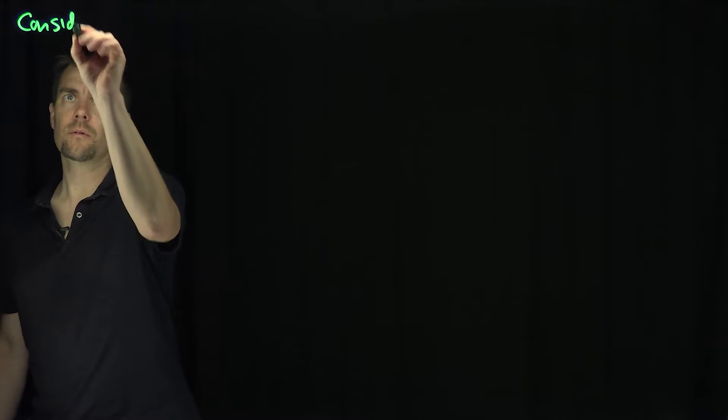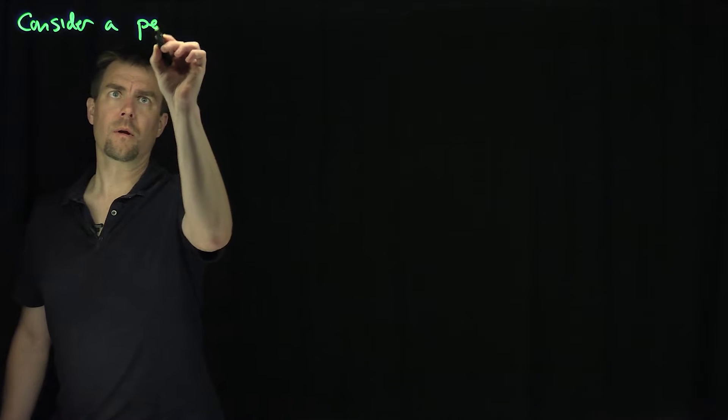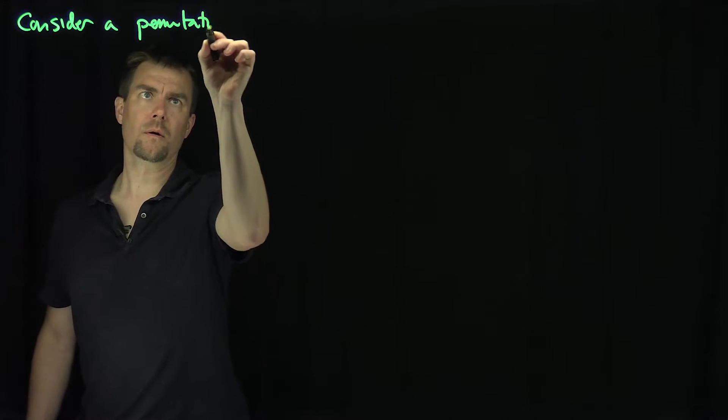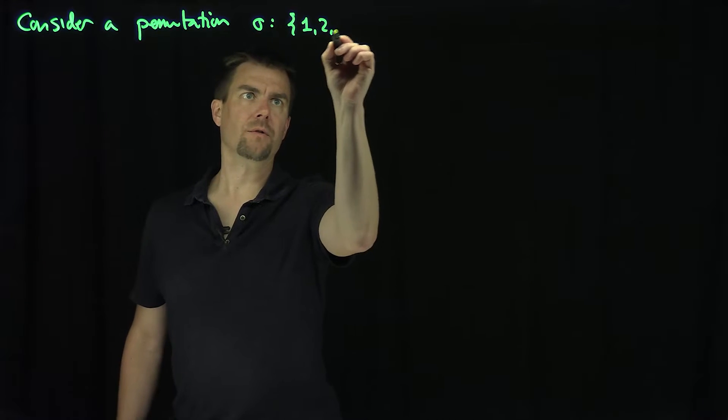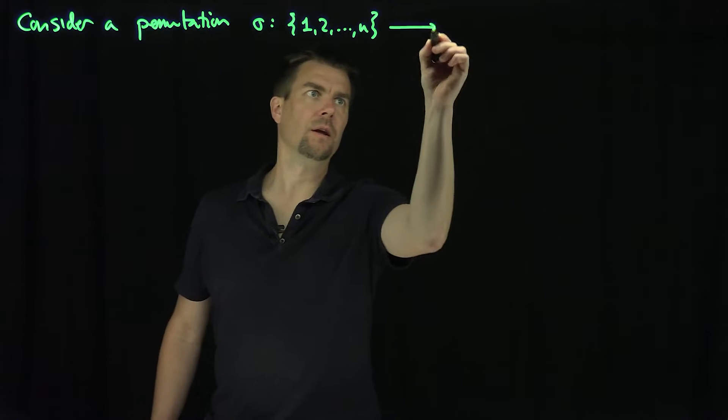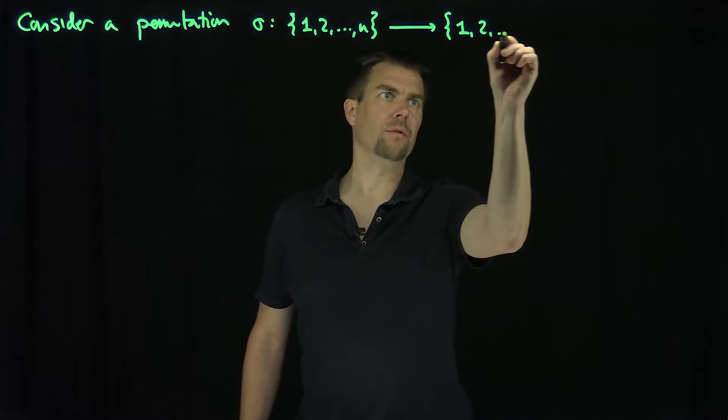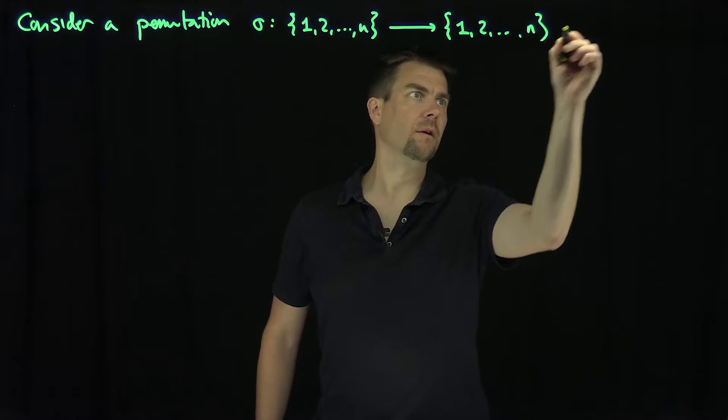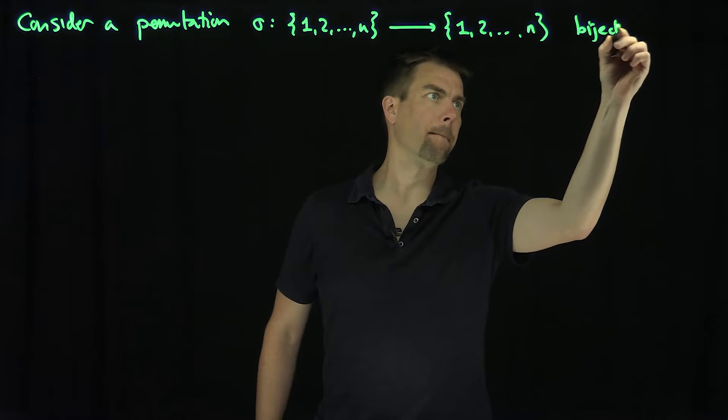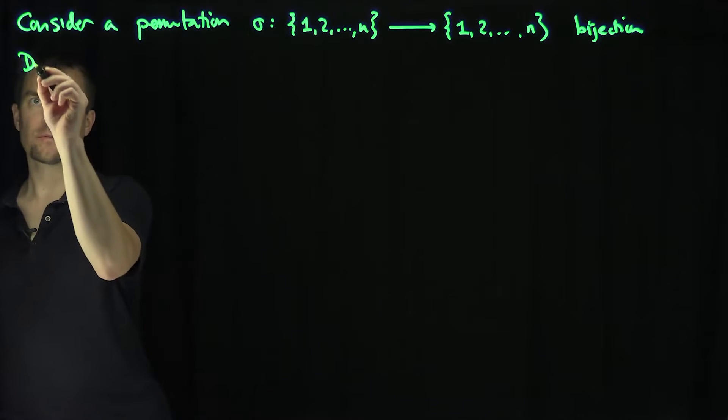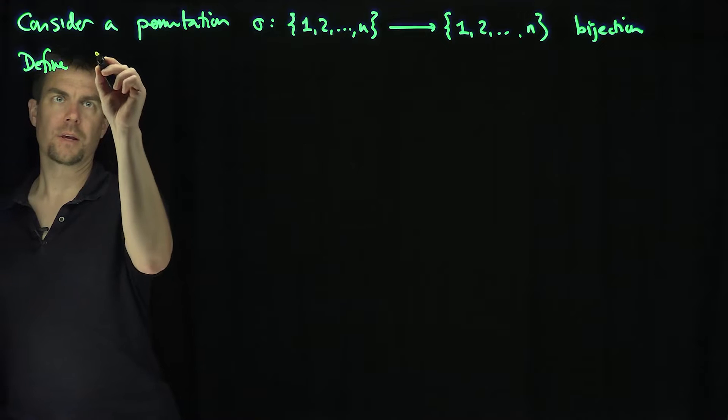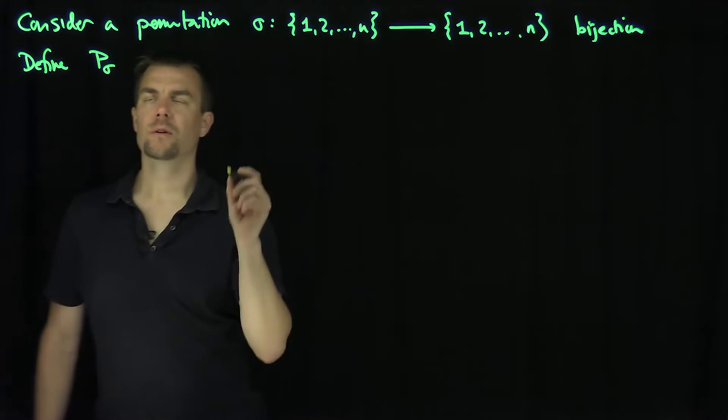Let's consider a permutation sigma which maps the set {1, 2, up to n} into the set {1, 2, up to n}. It has to be a bijection, and then to define a matrix, define P_sigma to be an n by n matrix.